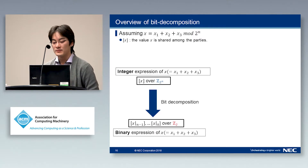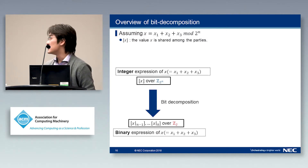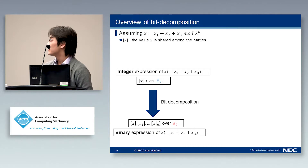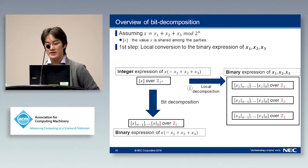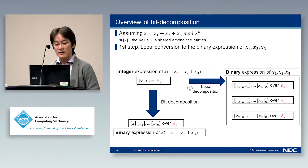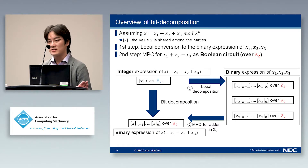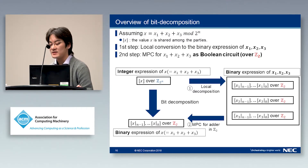We show the overview of the protocol. We assume the share structure where a secret X is shared as X1, X2, and X3, such that their sum equals X modulo 2^N, and box notation of X means X is shared among the parties. Bit decomposition can be separated into two phases. The first step is local conversion to the binary expression of X1, X2, and X3 — not X itself — which is closely related to the secret sharing structure and can be done locally. Then the second step performs MPC for X1 + X2 + X3 as a Boolean circuit, yielding the binary expression of X.